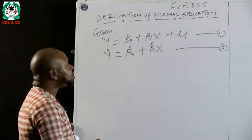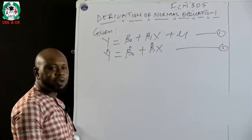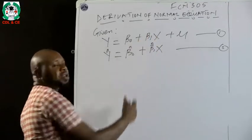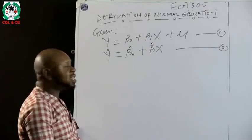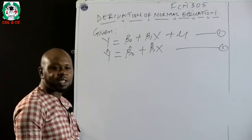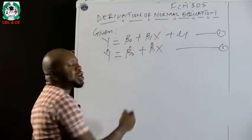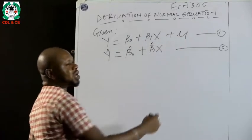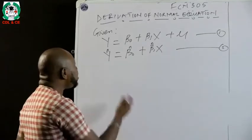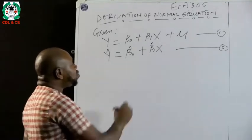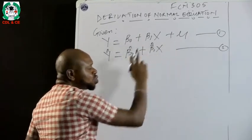For example, if Y represents the quantity demanded of a particular commodity and X represents price, we know that price is not the only factor influencing quantity demanded — there are other factors. So X represents price, while U captures all other factors that do not appear in this model but are equally important. The estimated equation shows only the effect of X on Y, which is why U is no longer present.